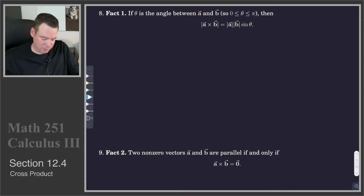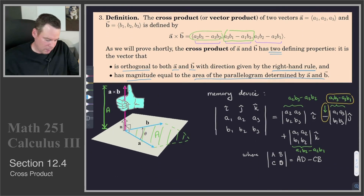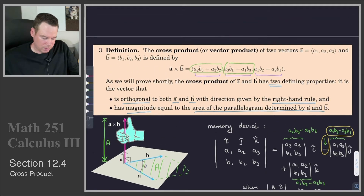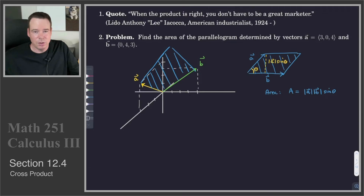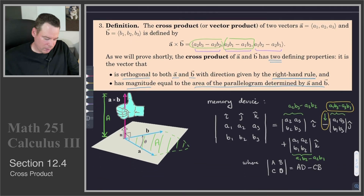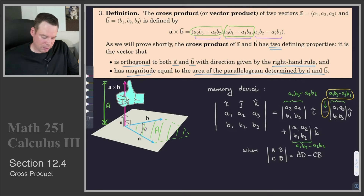That might not come as a surprise given things we've already stated. The magnitude of the cross product equals the area of the parallelogram determined by A and B. And from our earlier work, the area of that parallelogram is the magnitude of A times the magnitude of B times sine theta. Putting those two ideas together gives us that the length of the cross product is |A||B|sin θ.